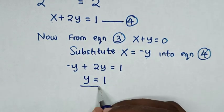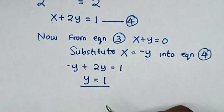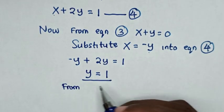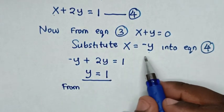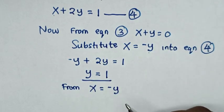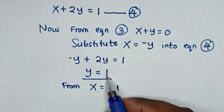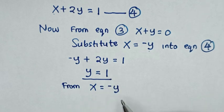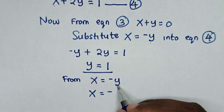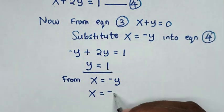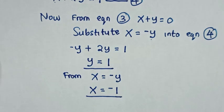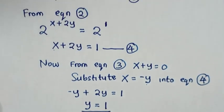Now from x is equal to negative y, we substitute the value y = 1, so it will be x is equal to negative 1. This is the value of x.